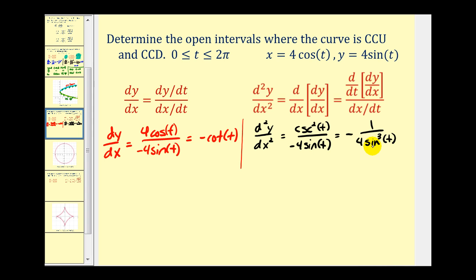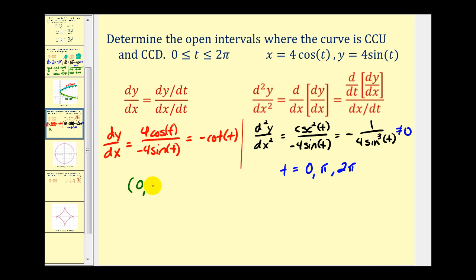We determine where the second derivative equals zero or is undefined. With a numerator of one, the fraction is never zero, but it is undefined when sine t equals zero. Sine t equals zero at t equals zero, pi, and two pi. Since we're only considering the interval from zero to two pi, we use pi to divide our interval into two parts: zero to pi, and pi to two pi.